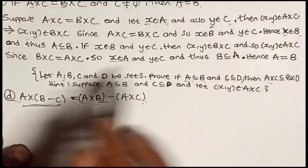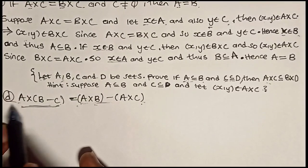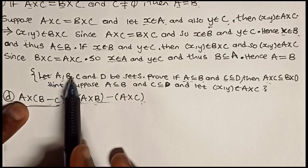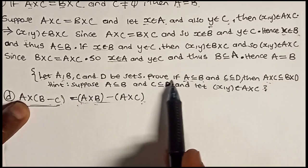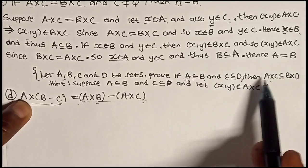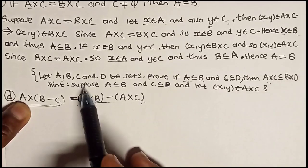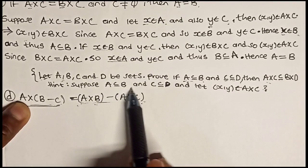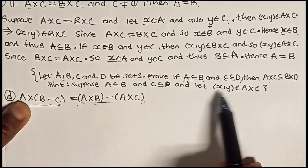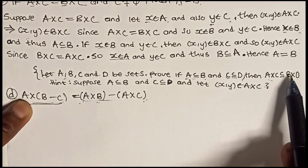Hence A equals B. Before doing part D, I'll leave this as an exercise: let A, B, C, and D be sets. Prove that if A is a subset of B and C is a subset of D, then A cross C is a subset of B cross D. A hint: suppose A is a subset of B and C is a subset of D, and let a pair (X, Y) be in A cross C. Your mission is to show that the pair (X, Y) is in B cross D. Try it out.